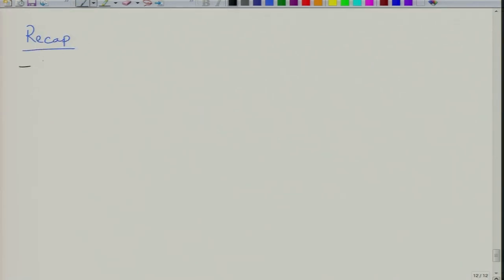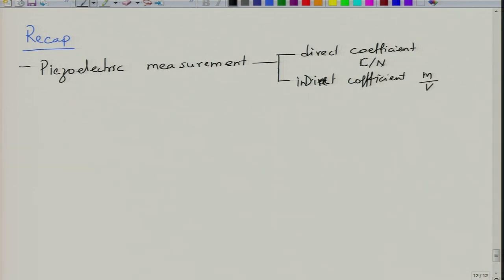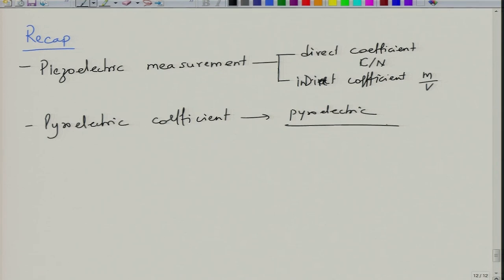In the previous lecture we learnt about piezoelectric measurements — what are different types of piezoelectric measurements, which are basically aimed at measuring the direct coefficient (Coulombs per Newton) or measuring the indirect coefficient (meters per volt). We also looked at how we measure piezoelectric coefficients. Pyroelectric coefficients are generally measured using measurement of pyroelectric current. Direct methods include the direct cantilever method, direct load application method, and laser interferometry methods.